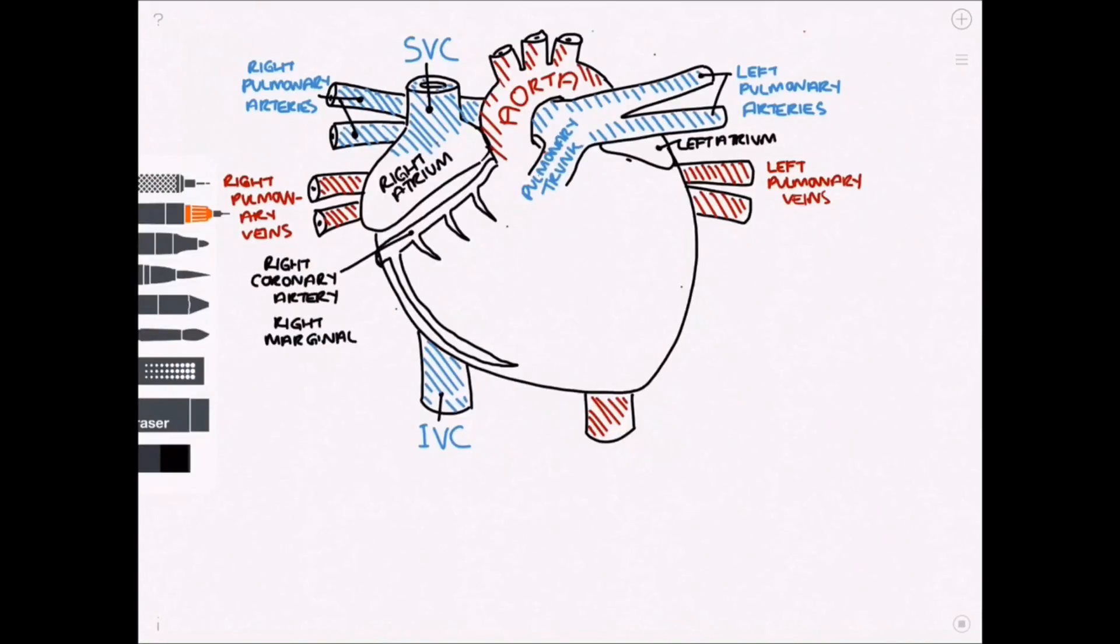And then this long branch that comes out along the inferior surface from the right hand side is called the right marginal artery. The pencil indicates the vessel going behind the heart as it wraps round. And that's the right posterior descending artery.